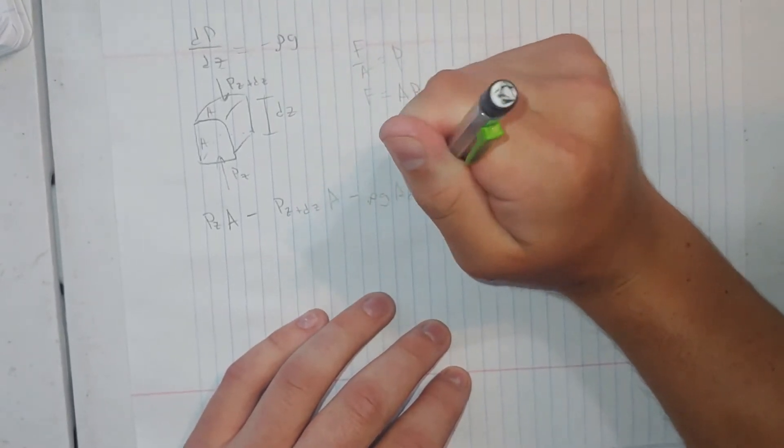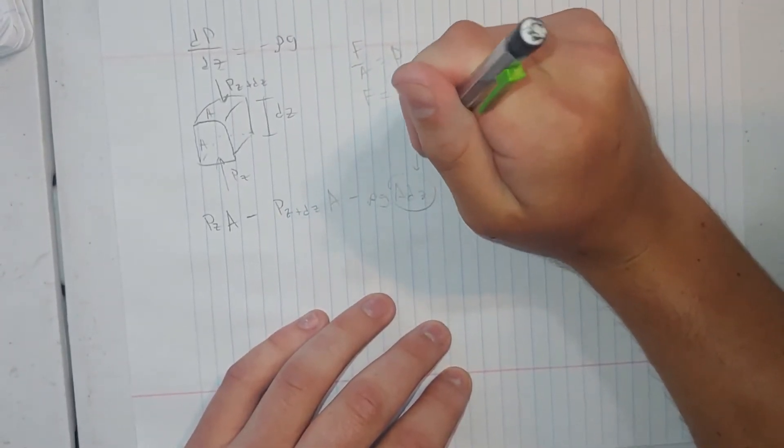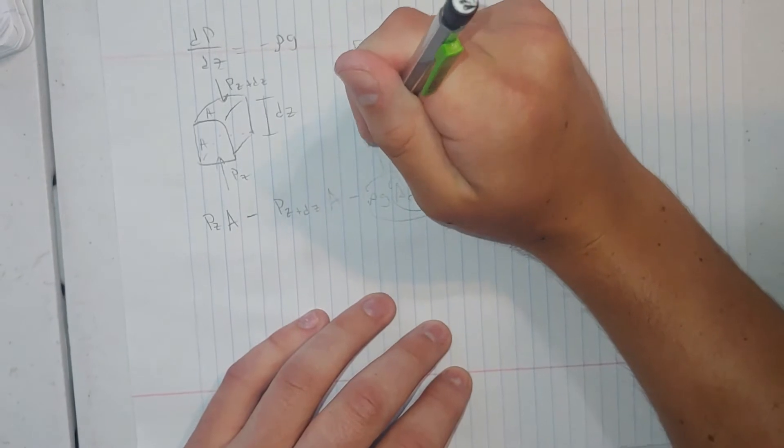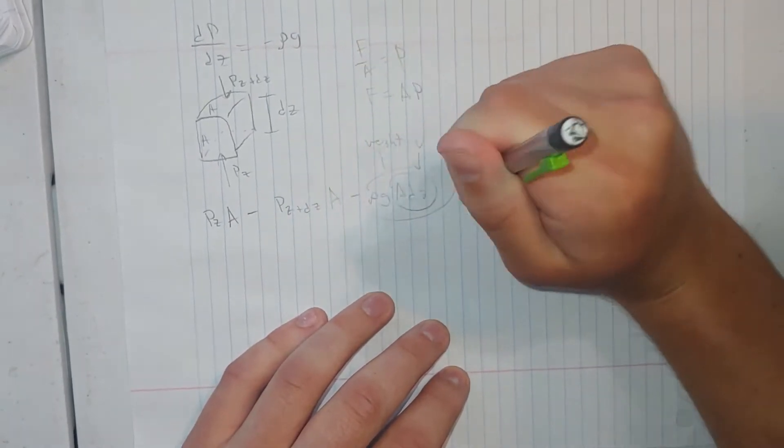That's ρg times A·dz. A·dz is volume, and this whole thing here is weight. That has to equal zero.